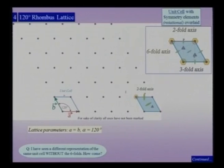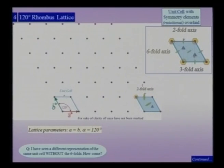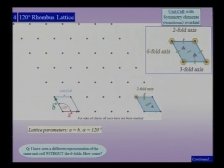On the right-hand side of this lattice, the same unit cell is shown with some symmetry elements overlaid on it. We have not overlaid all the symmetry elements, for the sake of clarity. Clearly, there is a 6-fold axis; there is also a 3-fold axis at the centroid of the triangle, which is half the rhombus unit cell; and there is also a 2-fold axis at half the distance of the diagonal.